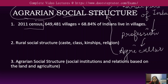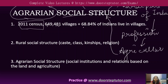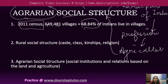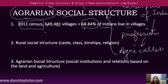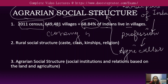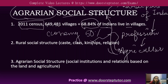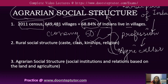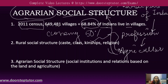As per the data of the 2011 census, we have 649,481 villages in India. In those villages, 68.84% of Indians live. And in the economic section, more than approximately 50% are still employed in agriculture. So it is very essential to understand agrarian social structure, because to understand society, we cannot leave this part out — we have to understand the agrarian social structure to understand what is happening in society and how different institutions are working there.